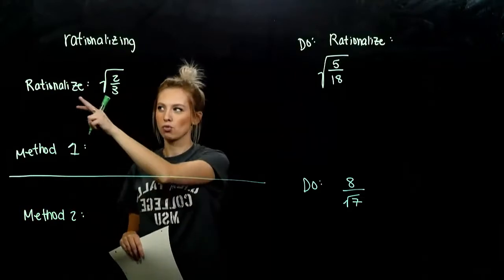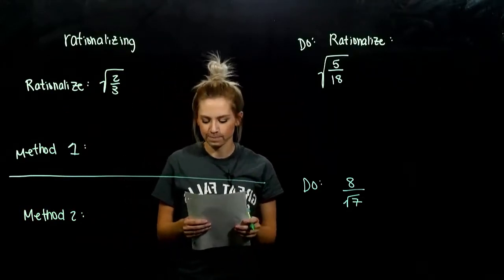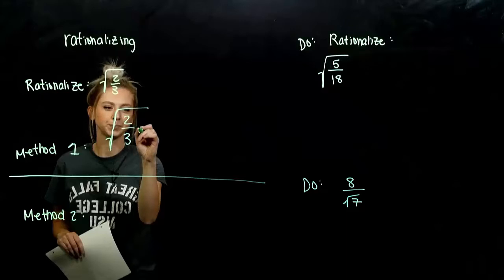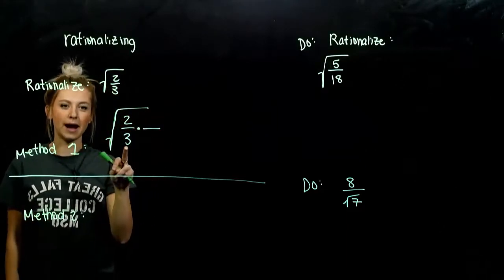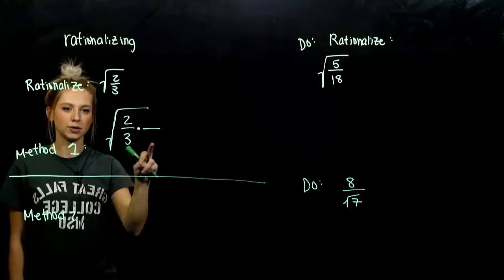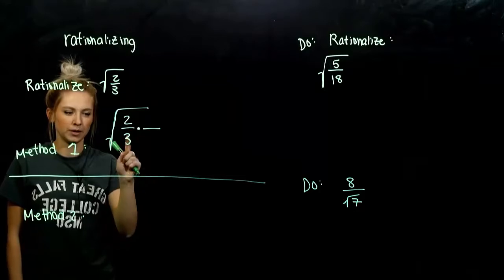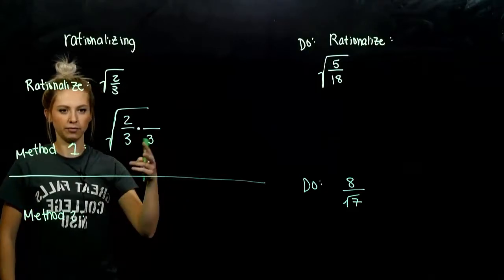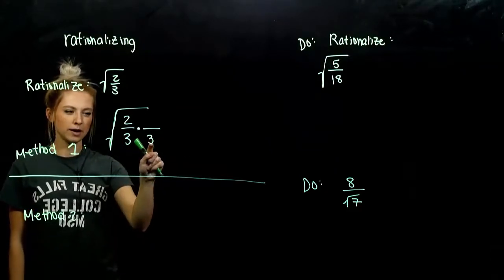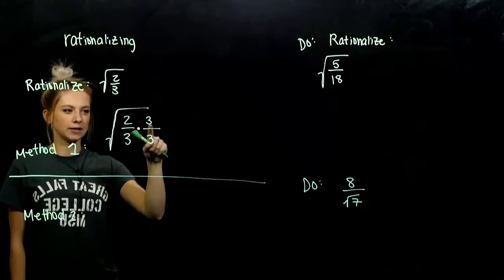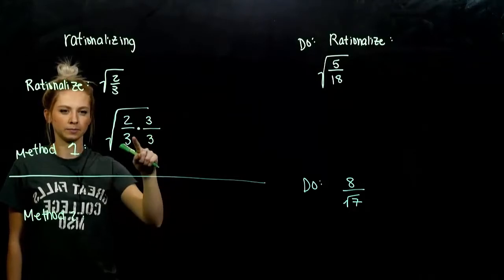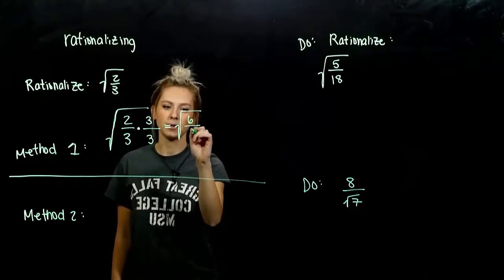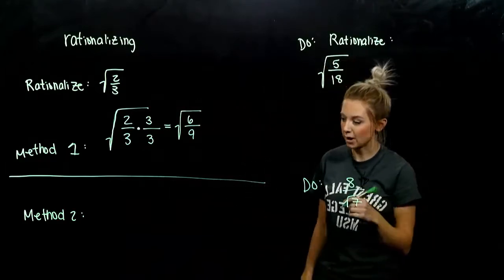We're going to take the square root of two-thirds and try to rationalize the denominator. On the inside, I have two-thirds underneath this one radical. What do I need to multiply three by to turn this denominator into a perfect square? We want to work with the smallest one possible. Another factor of three, because then it will be nine, which is a perfect square. Whatever I do to the bottom, I also have to do to the top — because we're multiplying by one, just changing what it looks like. Now we can evaluate: I've got six up top and nine down below. The denominator is now a perfect square.